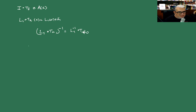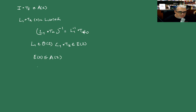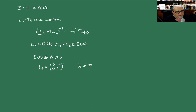Obsérvese que si L₁ pertenece a O₂, entonces la transformación L₁ compuesta con T_A pertenece a E₂, y entonces E₂ es un subgrupo del afín. Además hay afines que no son rígidas, como la transformación con L₁ igual a la matriz diagonal (λ, λ), con λ distinto de 0. Esta no es una rígida y es una afín.